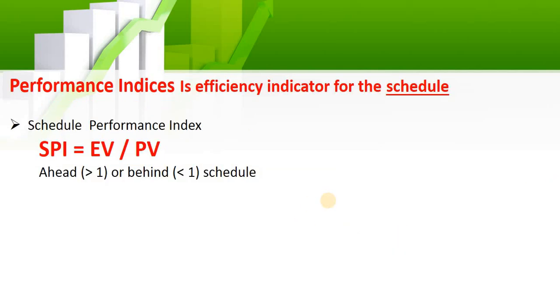The SPI, which is called the Schedule Performance Index, is the earned over planned. If it is greater than one, you are ahead of schedule. If it is less than one, you are behind schedule.